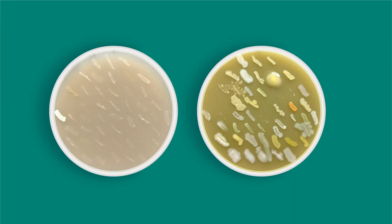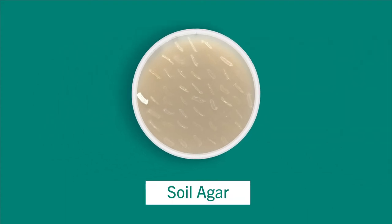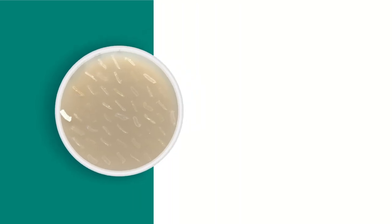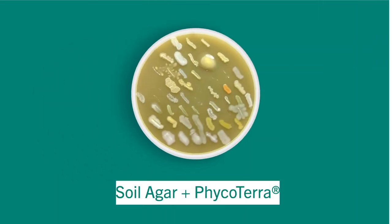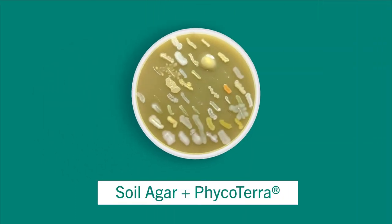Here's an example of improved soil health in a farm system on two different sets of soil agar plates. One is just soil and agar mixed together and streaked to grow microbes. You can see not a whole lot coming in, except for this column here on the far left, and rather unimpressive populations growing in the streak marks. You can improve soil health by adding Phycoterra and increasing the total abundance and diversity of the system.